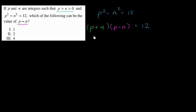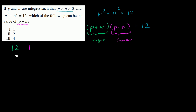p plus n is going to be the larger of the two factors, and p minus n is going to be the smaller. So we could have 12 times 1 — that's equal to 12. We could have 6 times 2, which is equal to 12. We could have 4 times 3, which is also equal to 12. These are essentially all the contenders for p plus n and p minus n.